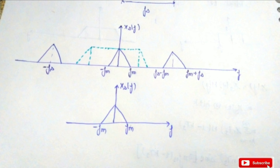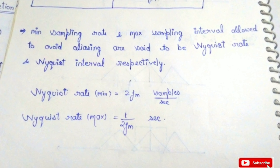To avoid aliasing, we perform over-sampling with fs greater than 2fm, ensuring proper message signal reconstruction without distortion. The minimum sampling rate required to avoid aliasing is defined as the Nyquist rate, which equals 2fm, measured in samples per second. The corresponding maximum time interval is defined as the Nyquist interval, equal to 1/(2fm), measured in seconds. In this way we reconstruct our message signal from the sampled signal.